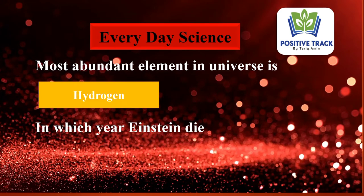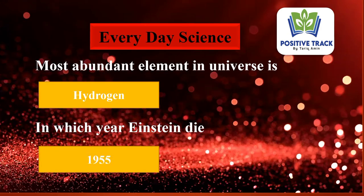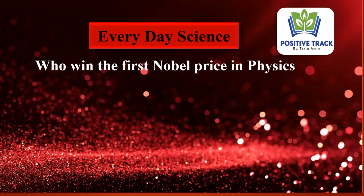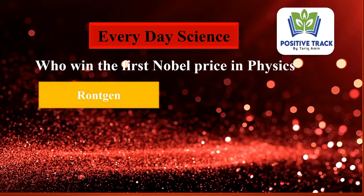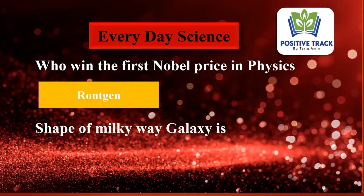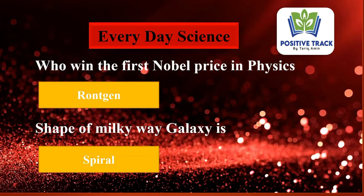In which year did Einstein die? It's 1955. Who won the first Nobel Prize in physics? It's Wilhelm Röntgen, for the discovery of X-rays. The shape of the Milky Way galaxy is spiral.